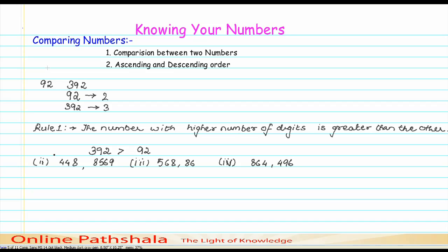If I apply Rule Number 1 here, I can see that 448 has 3 digits and 8,569 has 4 digits. So I can clearly say that 8,569 is greater than 448.